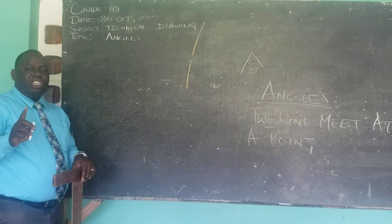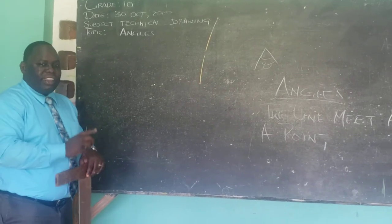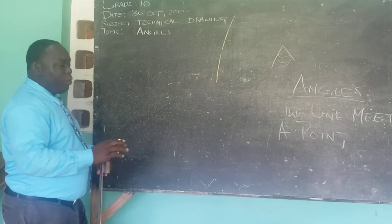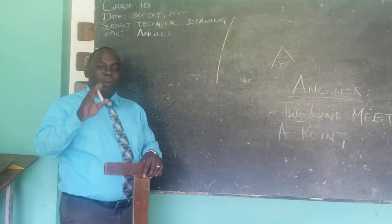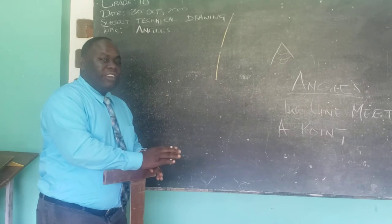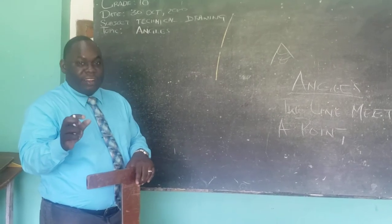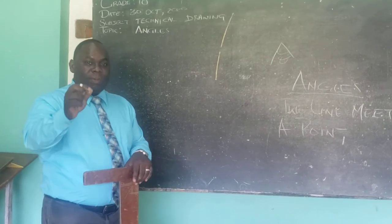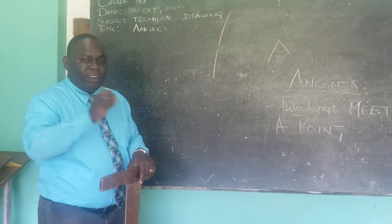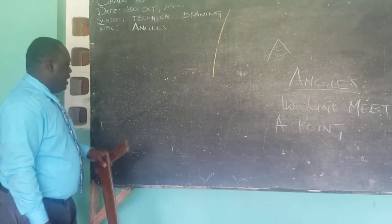Today we're going to be teaching you how you go about constructing a 60 degree angle as well as a 90 degree angle. We're also going to be focusing on how you bisect the angle. If you bisect a 60 degree angle, you will end up with a 30 degree angle. And if you bisect a 90 degree angle, you will end up with a 45 degree angle. So that is what we're going to be going through today.